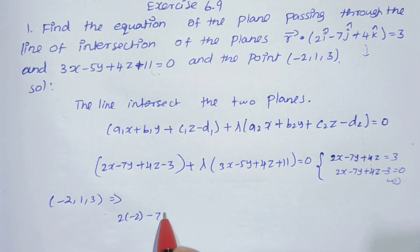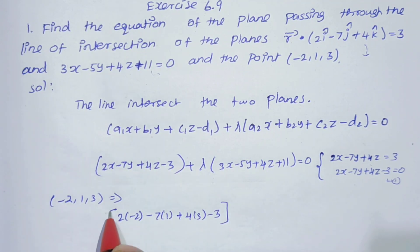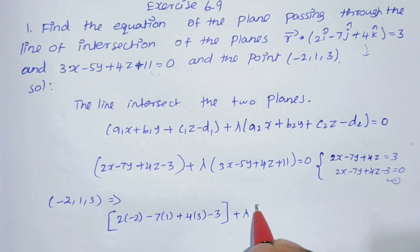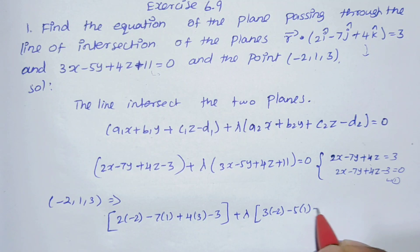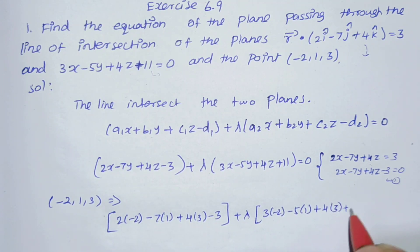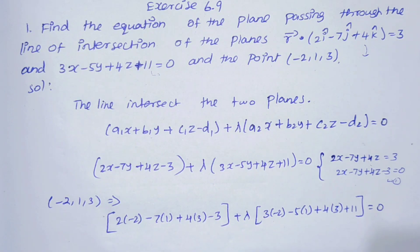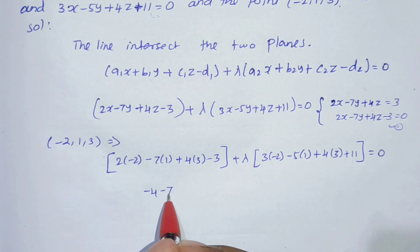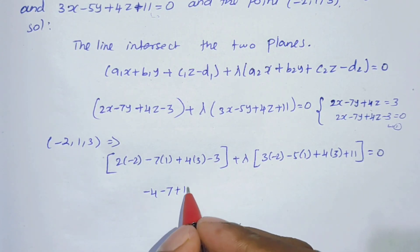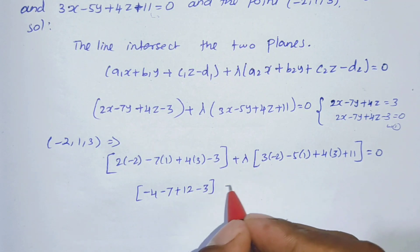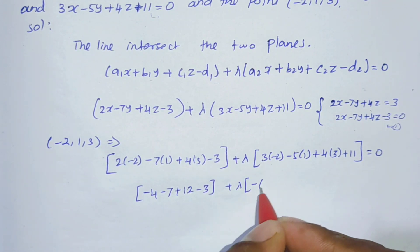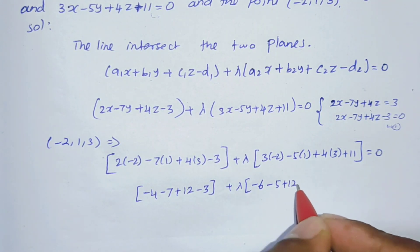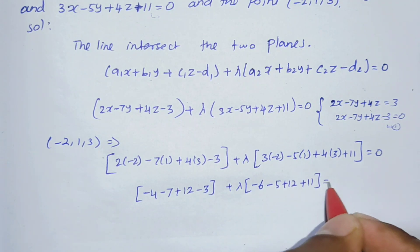Substituting the point (-2, 1, 3): 2(-2) minus 7(1) plus 4(3) minus 3 plus lambda of 3(-2) minus 5(1) plus 4(3) plus 11 equals 0. Multiplying out gives: minus 4 minus 7 plus 12 minus 3 plus lambda of minus 6 minus 5 plus 12 plus 11 equals 0.